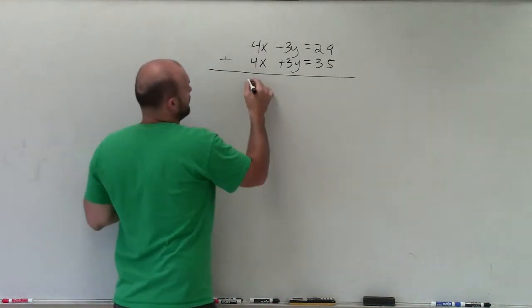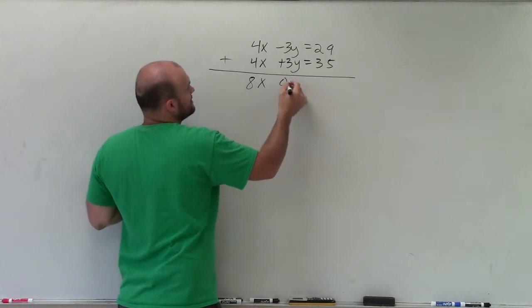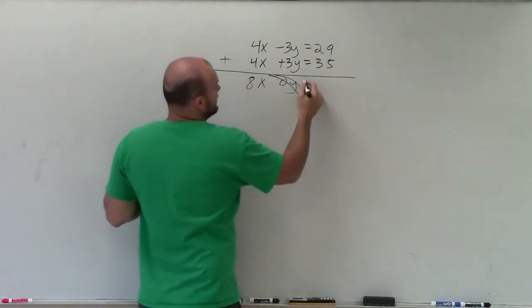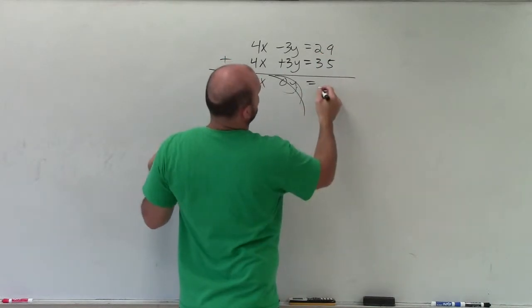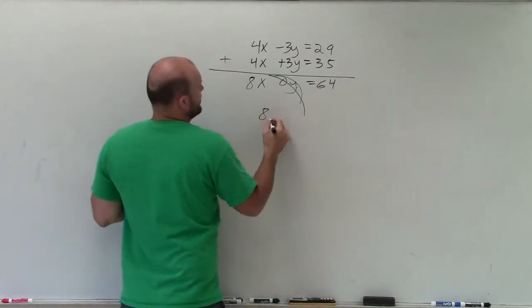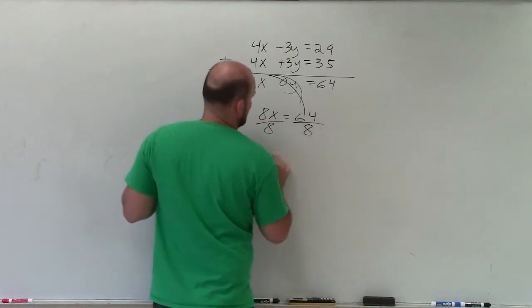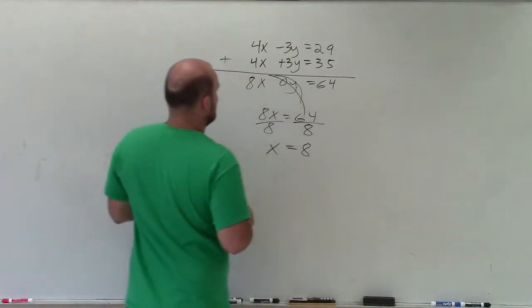So 4x plus 4x is 8x. Negative 3y plus 3y is 0y, which is pretty much non-existent, equals 29 plus 35 equals 64. Therefore, I have the equation 8x is equal to 64, divide by 8, divide by 8, x equals 8.